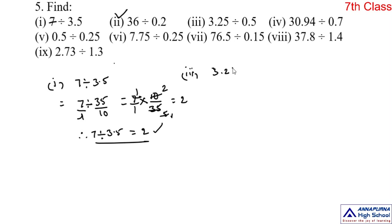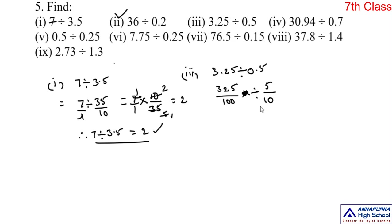Third one: 3.25 divided by 0.5. Here both are decimal numbers. Convert into fraction numbers. That means 3.25 becomes 325 divided by 100, and 0.5 becomes 5 by 10. So we have 325 by 100 divided by 5 by 10. Division of a fractional number by another fraction — the rule is: multiply the first fraction by the reciprocal of the second fraction.